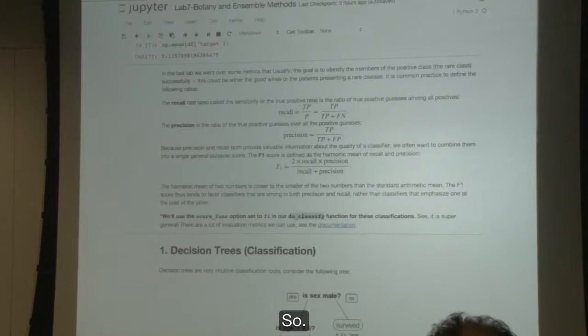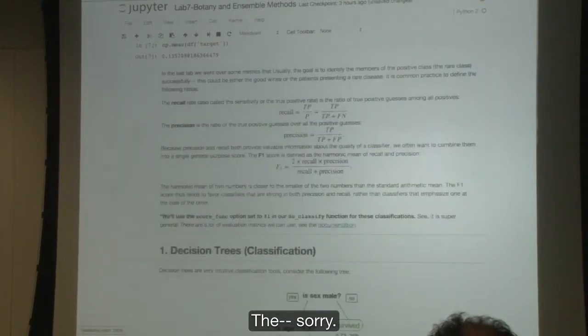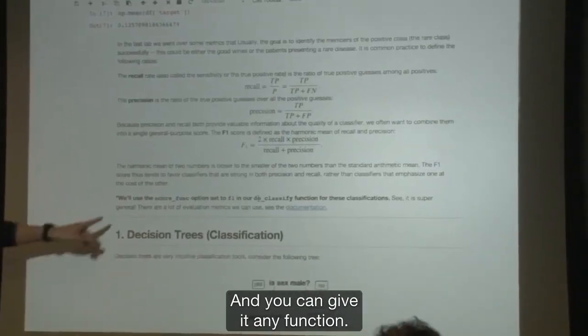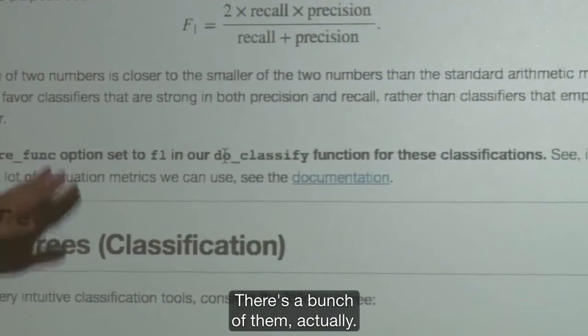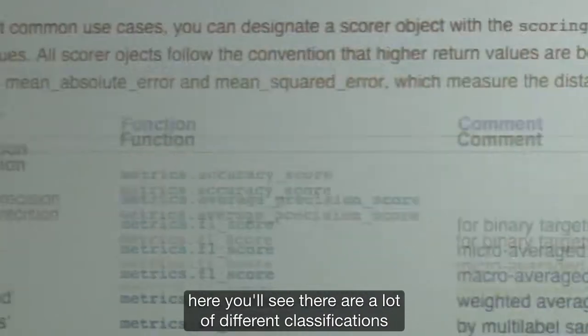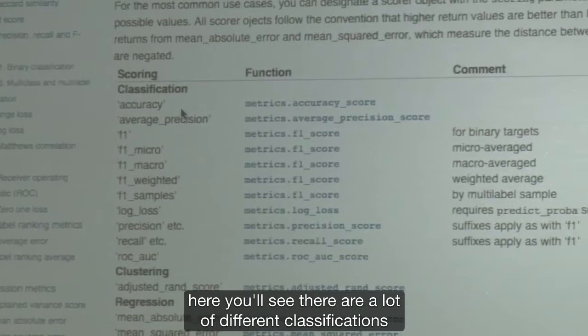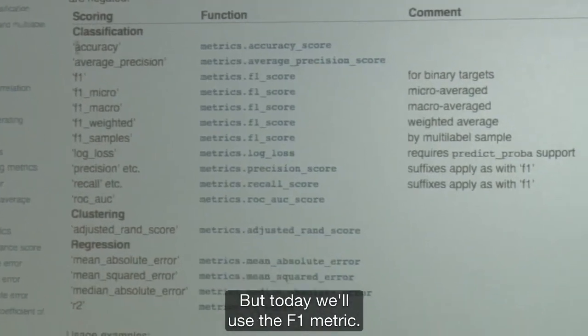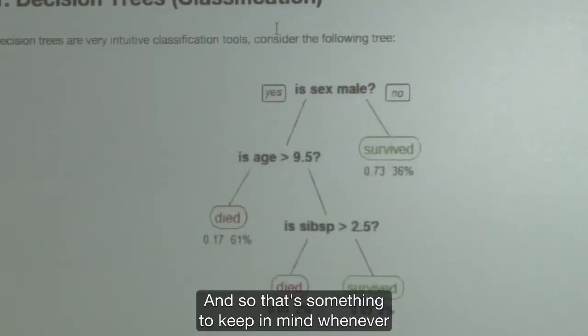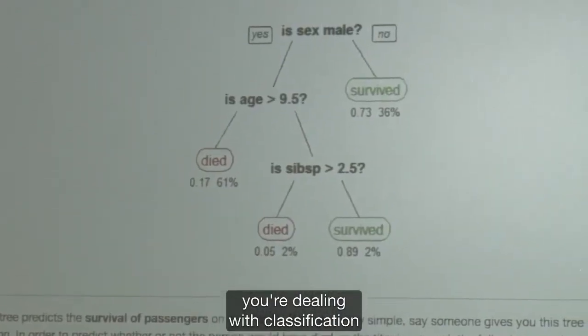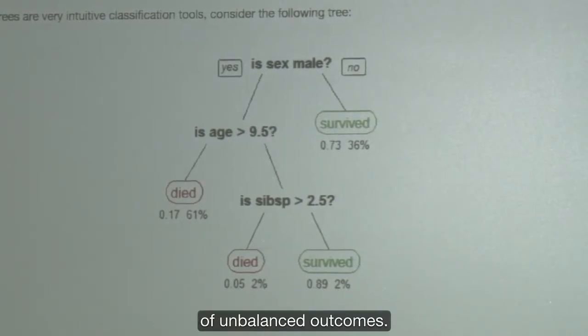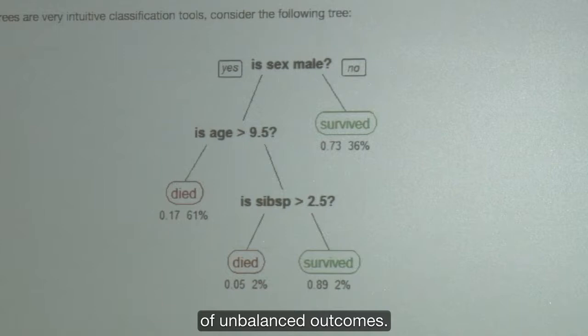So in do classify, there's actually a score function argument. And you can give it any function. If you just go into the documentation here, you'll see there are a lot of different classification metrics. But today, we'll use the F1 metric. So that's something to keep in mind whenever you're dealing with classification of unbalanced outcomes.